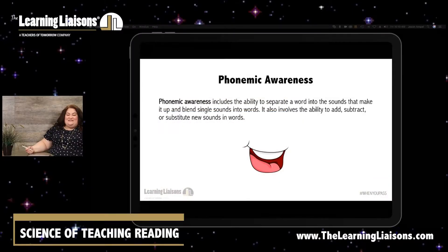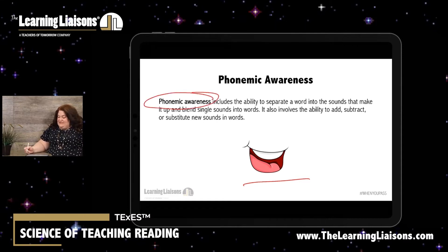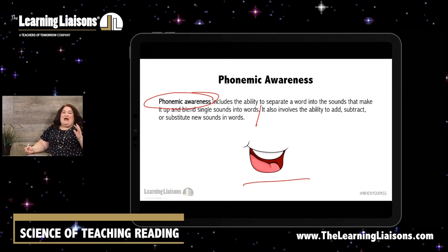All right. So we're going to go ahead and dig into some of these different areas, components of literacy acquisition. And the first one we're going to look at is phonemic awareness. Right away, the first thing that you're seeing on this screen is this smile, this mouth right here. And that is purposeful because I want you already thinking about speaking. That's going to be our clue here. But let's look at the definition first. Phonemic awareness includes the ability to separate a word into the sounds that make it up and blend single sounds into words. I'm going to draw a line here because we're going to come back and stop there. Once we finish the definition, it also involves the ability to add, subtract or substitute new sounds and words. There's a lot to unpack here. It looks like a short definition, but this is packed with things we need to talk about.